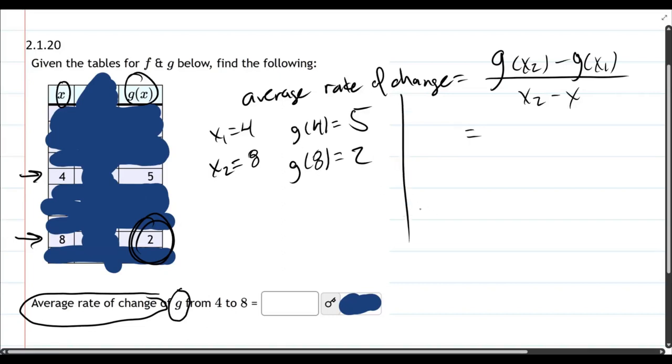So we're ready to plug all these values into the average rate of change. Let's go with the denominator first: x₂. So I'm doing x₂ minus x—should be x₂ minus x₁.